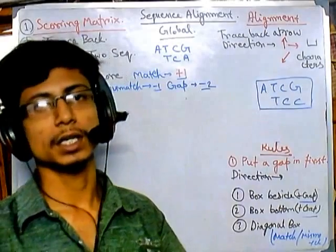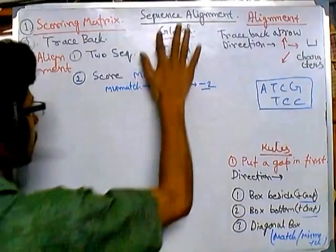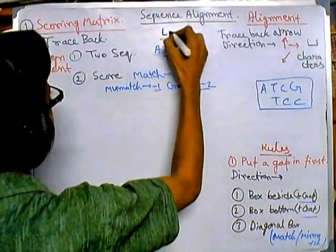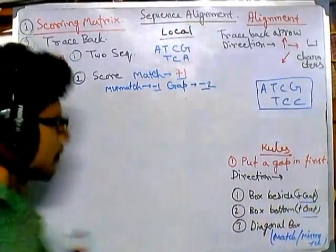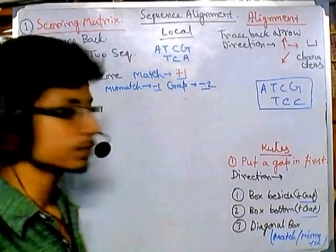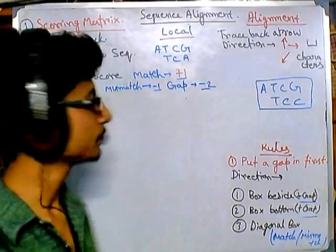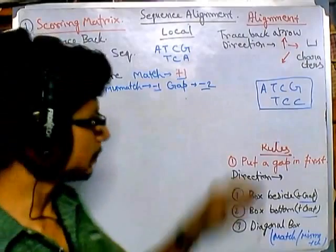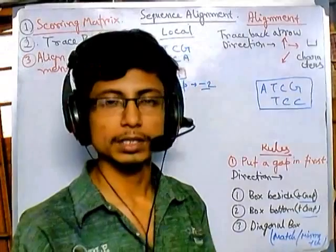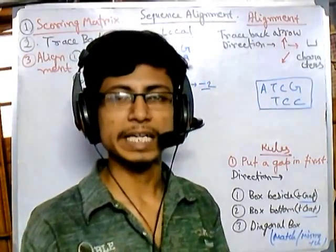We do local sequence alignment in those cases — looking at local rather than global alignment. For local sequence alignment, a coding system must be used. The rules for filling the scoring matrix are similar overall; everything is essentially the same, simply instead of putting real values like minus 2, minus 5, or plus 2 in the scoring matrix...